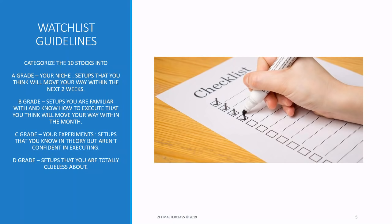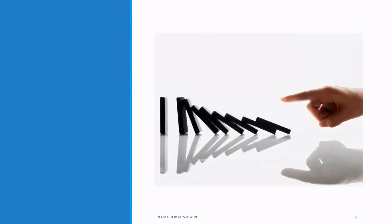E grade is the setup you want to blacklist. For example, in the PSE, if for some reason a stock consistently moves against you — every time you buy it drops — after 4, 5, 6, or 7 tries with no success, maybe you need to blacklist it. It just doesn't work for you, and that happens.